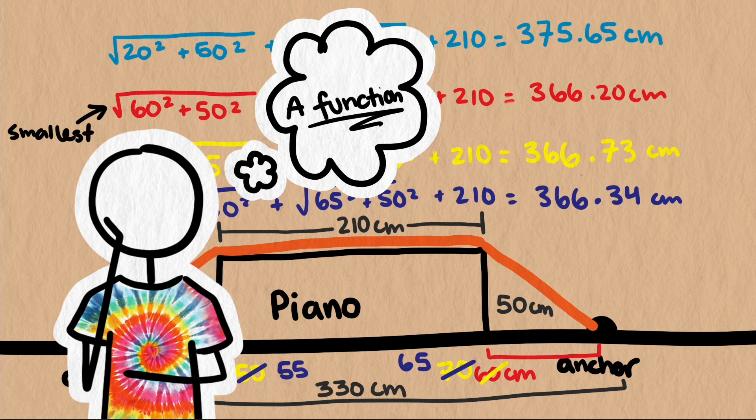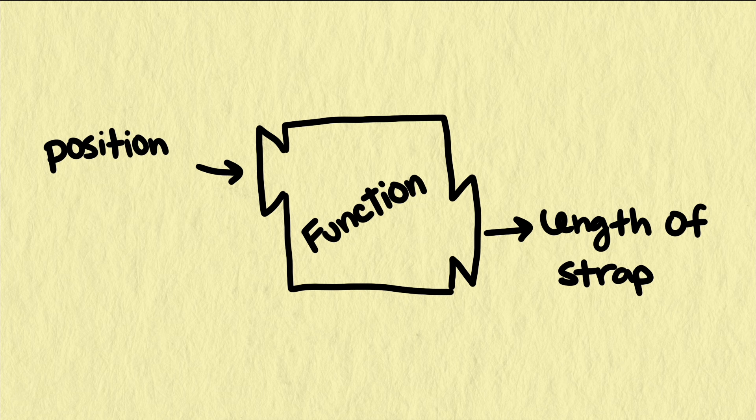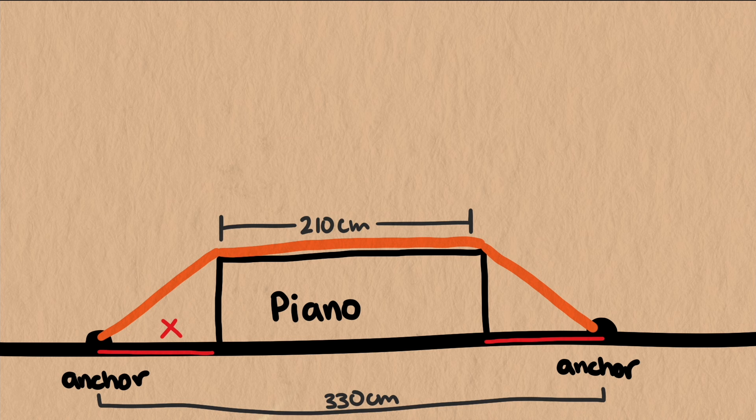Even better is if we could find a function to make this easier and find an exact minimum value. We want this function to give us the total length of strap given the position of the piano. We'll call the distance to the left of the piano x, which means the other side will be 330 minus 210 minus x, which simplifies to 120 minus x.